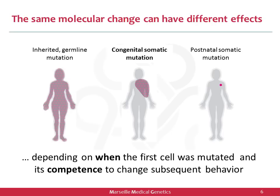The same molecular change can have very different effects on the body depending on when the first cell was mutated — before or after fertilization, and whether it happened early or late in development. The effects also depend on the competence of the cells to change their subsequent behavior. A pigment cell that acquires a congenital somatic mutation appears to not behave in the same way as a pigment cell that acquires that same DNA mutation from sun exposure later in life.